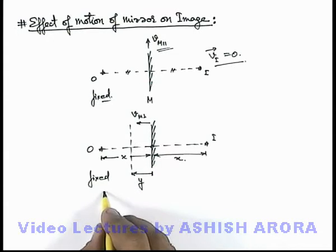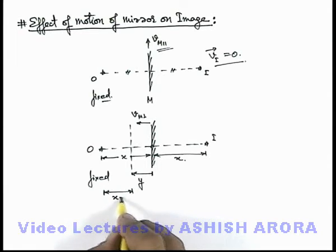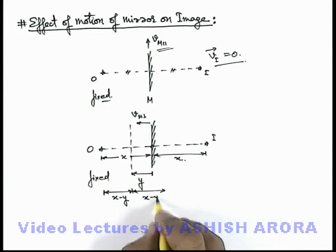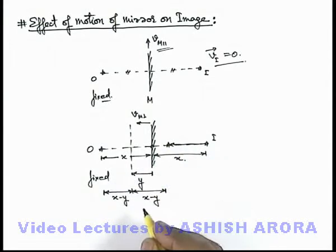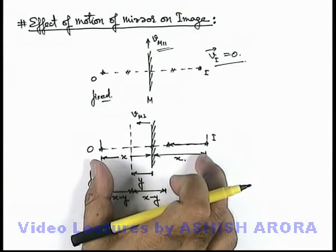Then the distance of object from mirror in its final position will be x minus y. So now the image must also be located at the same distance x minus y behind the mirror, so image will be displaced to this position. Earlier the separation between image and object was 2x.